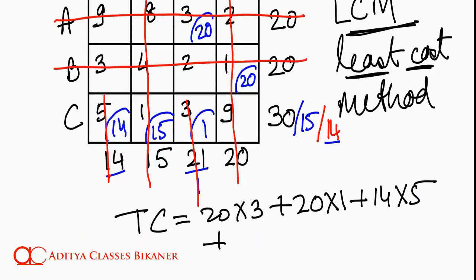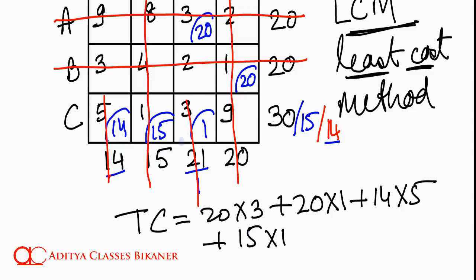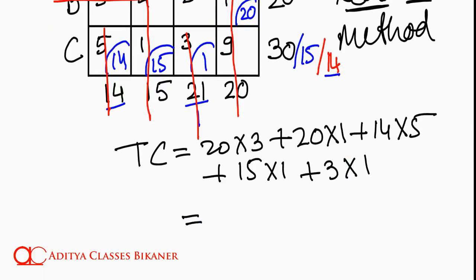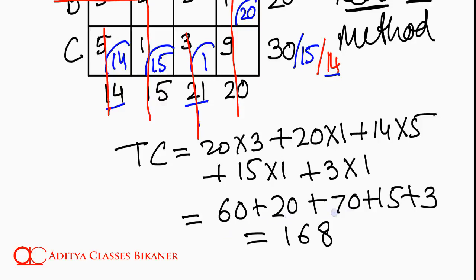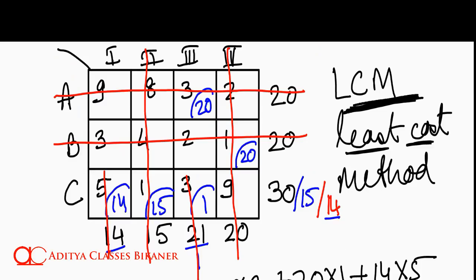Then, we transported 15 units at unit cost of 1. And lastly, we transported 3 units at unit cost of 1. So, this gives me total cost of my assignment at this particular point of time which totally sums up at 60 plus 20 plus 70 plus 15 plus 3 giving me a total of 168. This is total cost after first phase of assignment using least cost method.